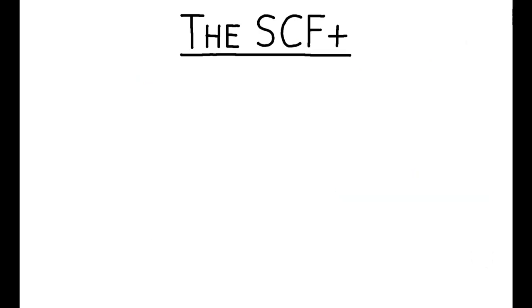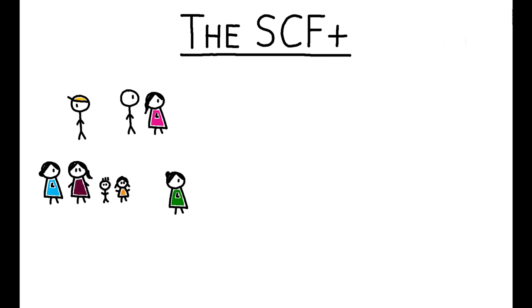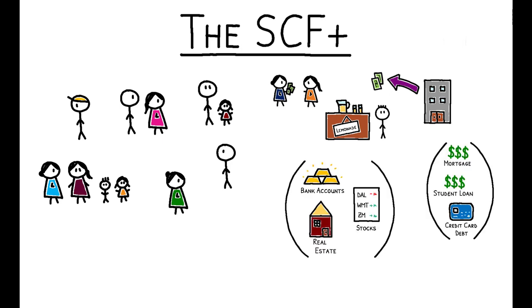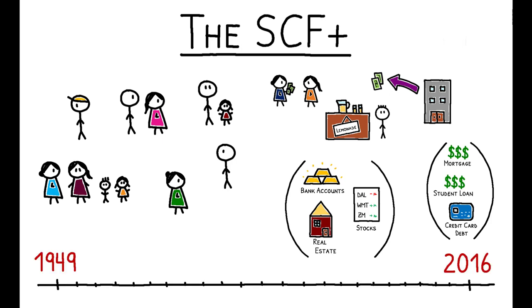This paper uses a newly compiled dataset, dubbed the SCF+, to answer these questions. These data comprise over 100,000 household observations over 35 years, track all sources of household income as well as all assets and liabilities, and thus allow the authors to study the joint evolution of income and wealth inequality in the US from 1949 to 2016.